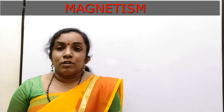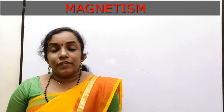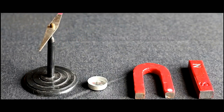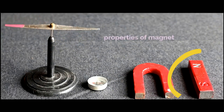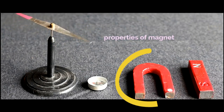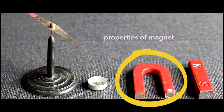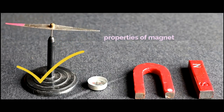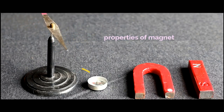Therefore, for different uses, artificial magnets are made in different sizes and shapes, which are bar magnets, U-shaped magnets, horseshoe magnets, magnetic needles, magnetic compass, etc.